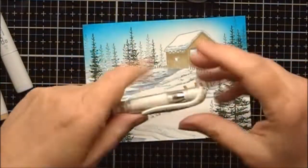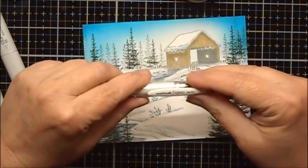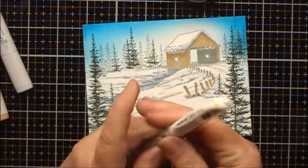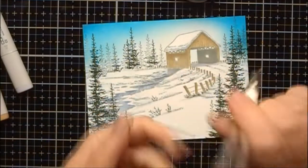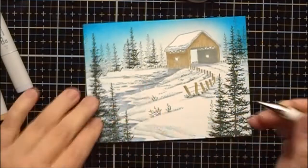And I'm going to use a white gel pen. This is Uniball Signo. It's part number UM153. It's a fairly thick white gel pen.